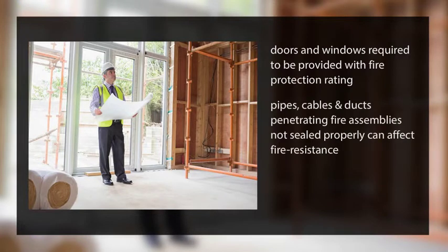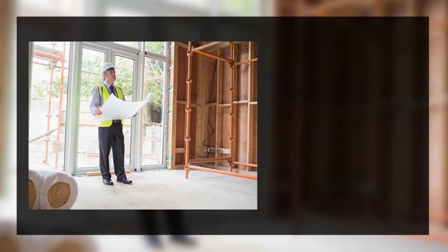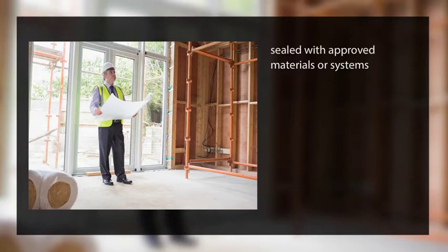Pipes, cables, and ducts penetrating the fire assemblies that are not sealed properly can also significantly affect the fire resistance rating of an assembly. These penetrations must be sealed with an approved material or system that resists fire and smoke from passing through these small gaps in the assembly.